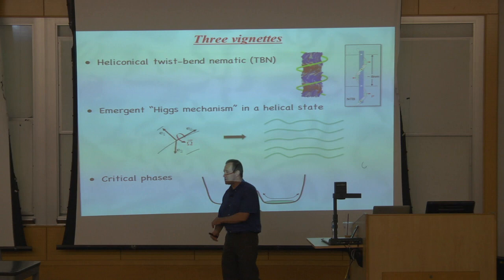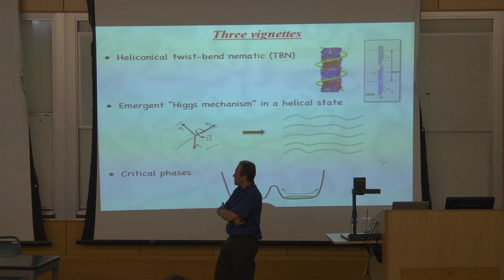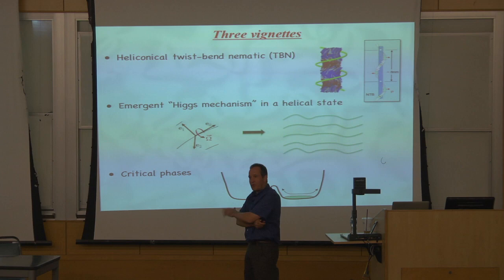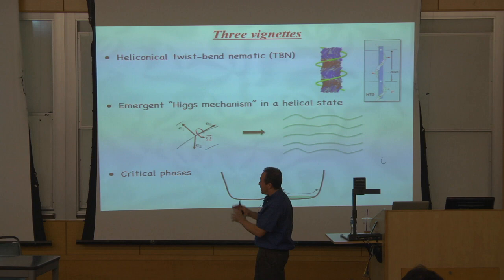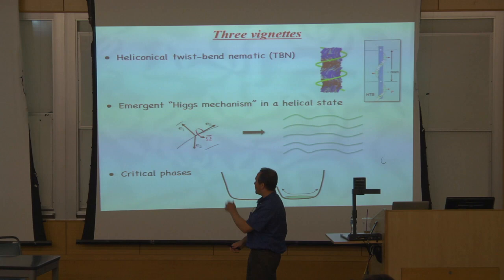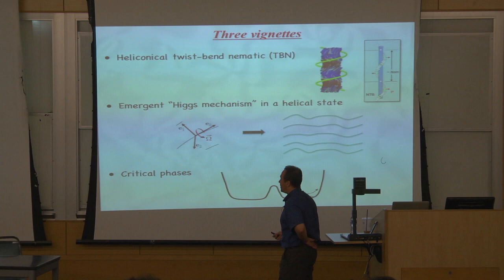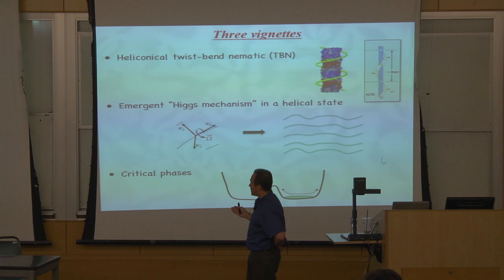This is a colloquium, so I wanted to string together a couple of ideas. There'll be three topics — I call them three vignettes because they're really kind of independent, and I could have given a colloquium on each one. But I decided to weave a theme and connect them together. The first part will be mostly experimental, about a new state of matter — a liquid crystal phase we call twist-bend nematic, or heliconical twist-bend nematic, sometimes abbreviated TBN.